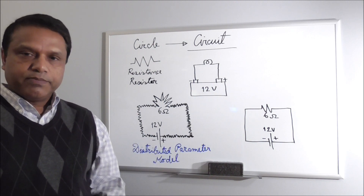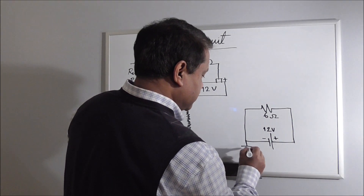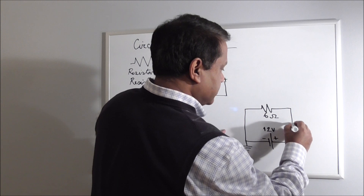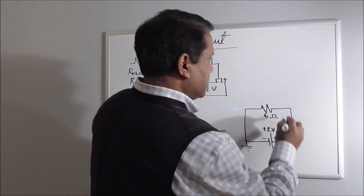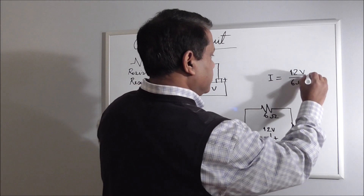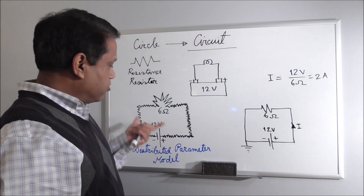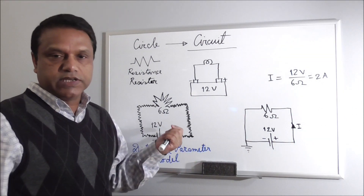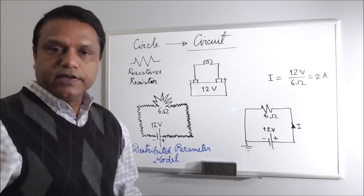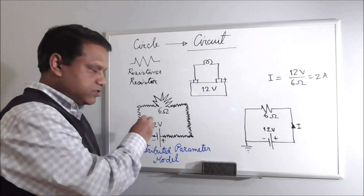Now we can apply Ohm's law, which we learned in a previous video, to find the current. Let's also mark the ground node — the ground node is here, and we know it means 0 volt at this node, and 12 volt on the other side. Current flows from positive to negative, so this is the current direction. Let's call this I. I will be 12 volt over 6 ohm, equal to 2 ampere. This model is called the lumped parameter model, because we are lumping the parameters into a point.